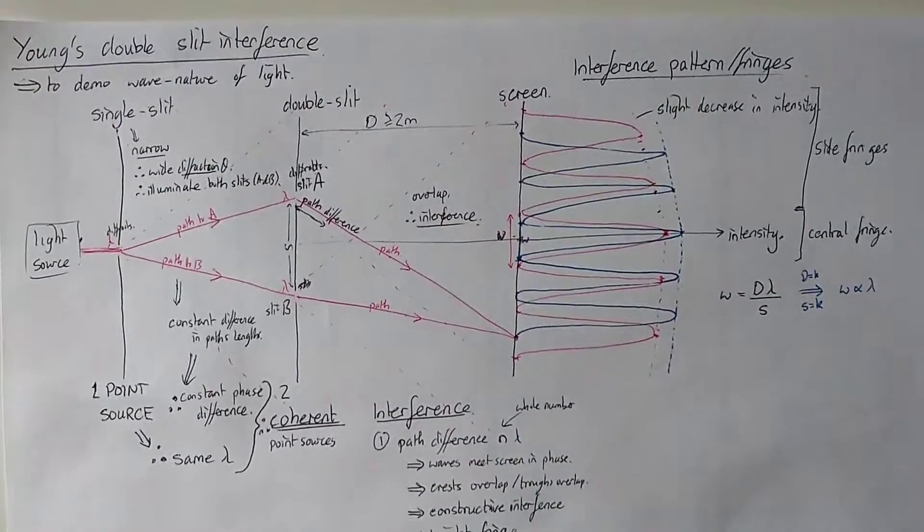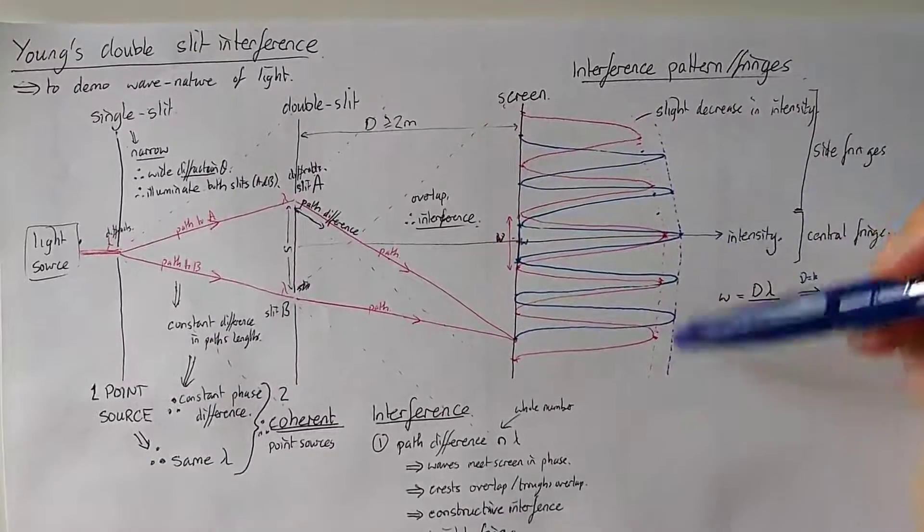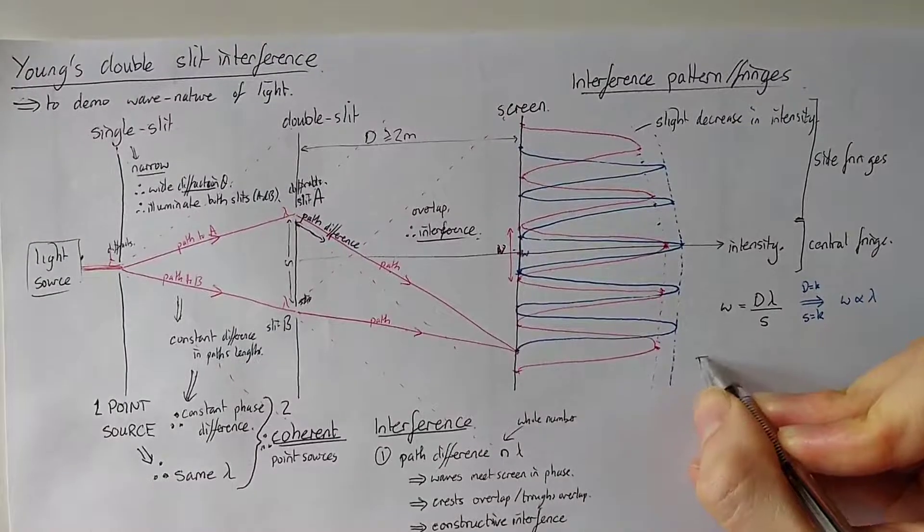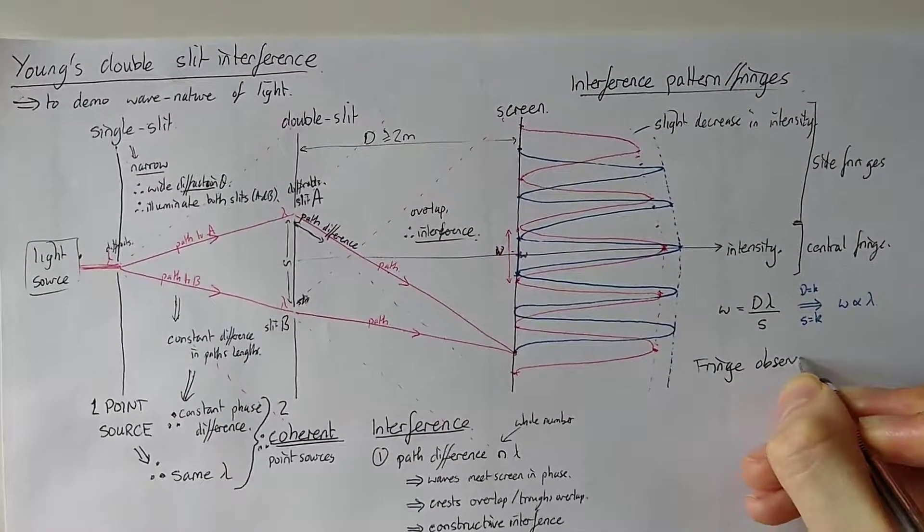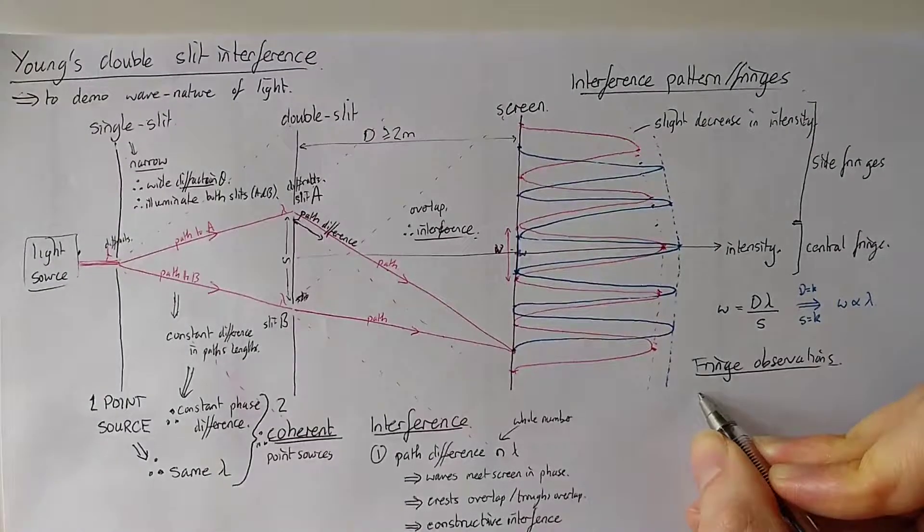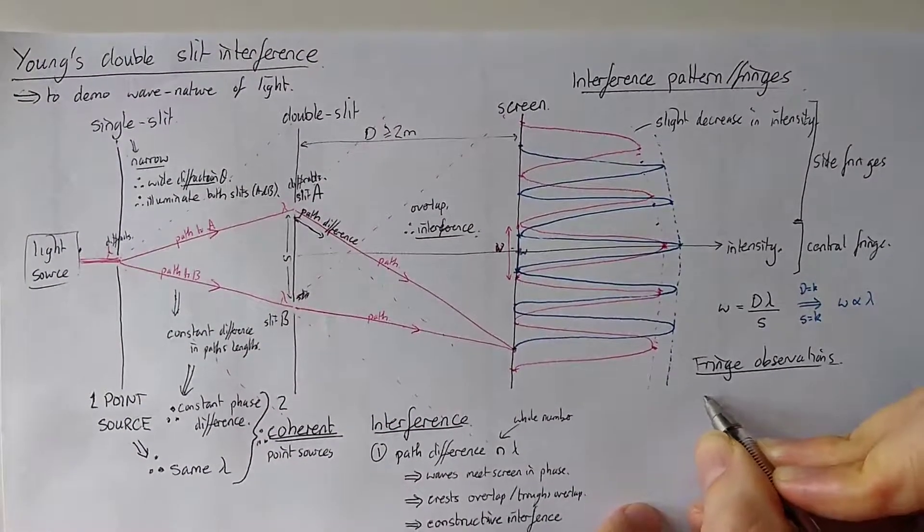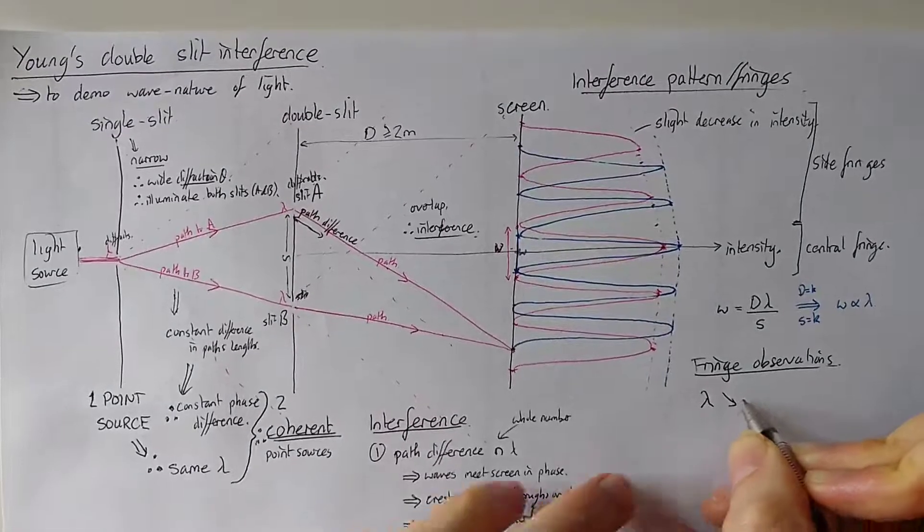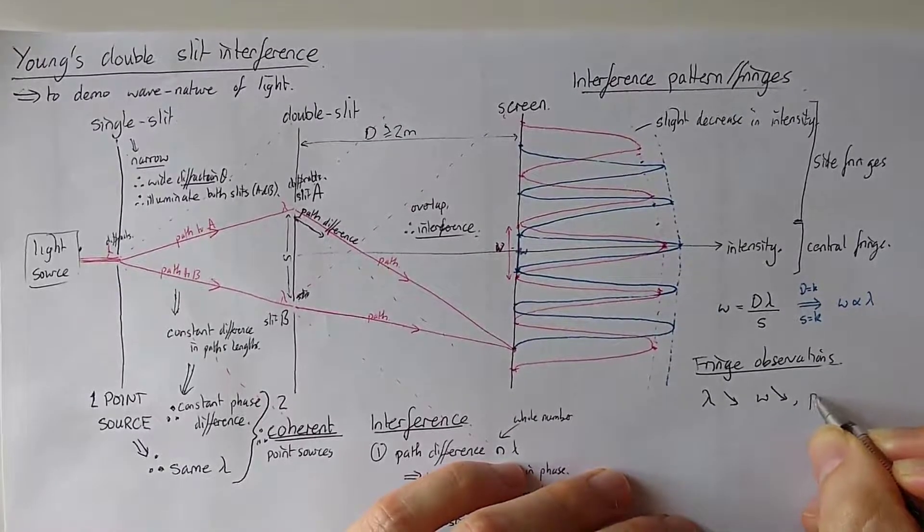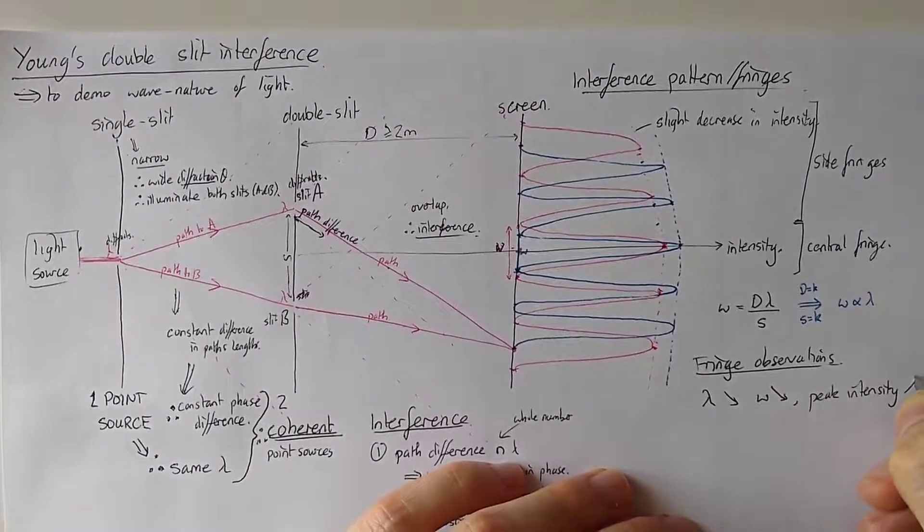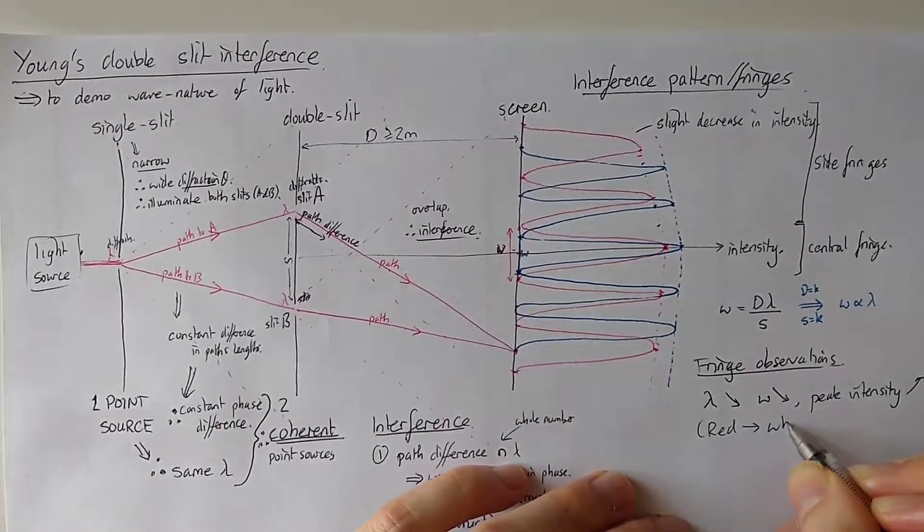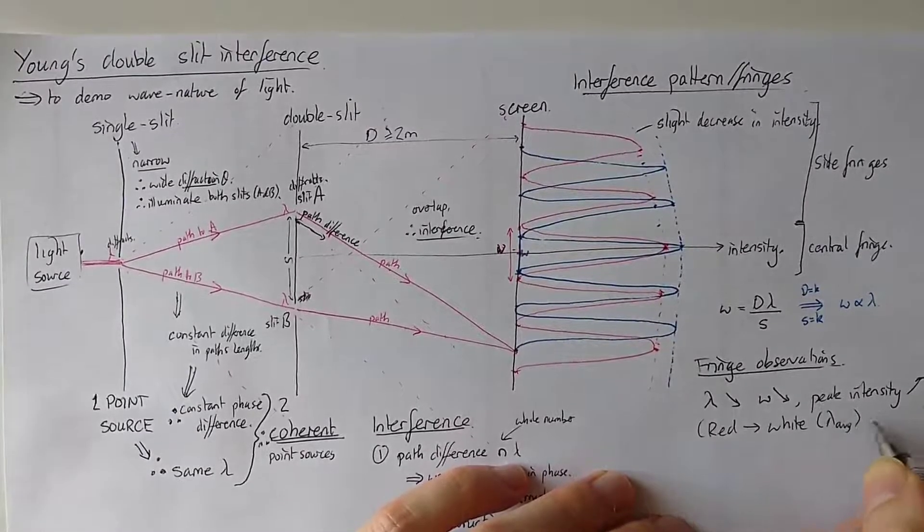Something like that. So we can see that the blue fringes are closer together and they're taller. Let's note that down. So fringe observations. If we went from a higher wavelength, so as wavelength decreases, the W decreases and peak intensity increases. That's for red to, say, white, in which case we consider the average lambda, to blue.